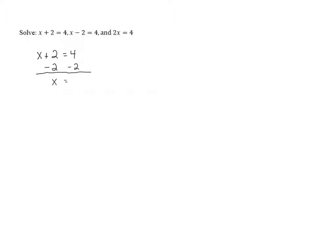On the right-hand side, when we perform the subtraction, 4 minus 2 gives us 2. So we end up with x equals 2. And since we have x alone on one side, and we can see that x is equal to 2, that is our solution: x equals 2.